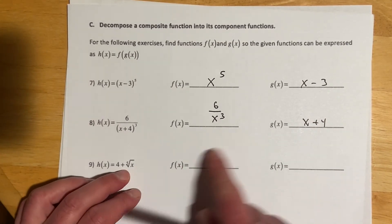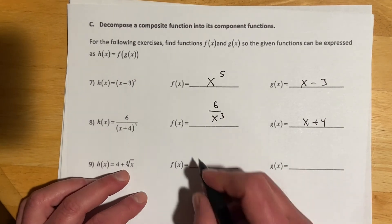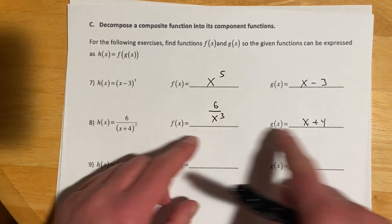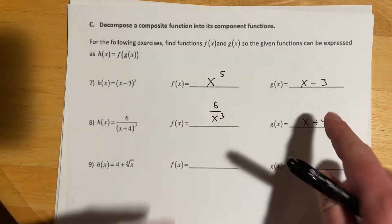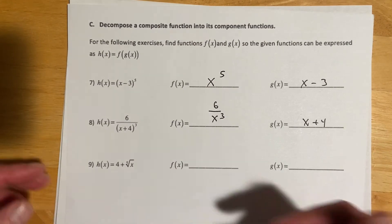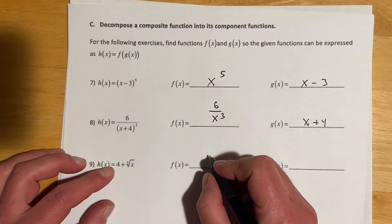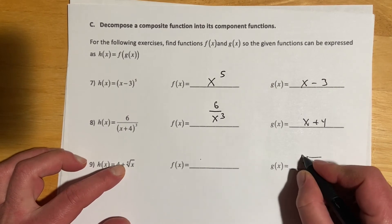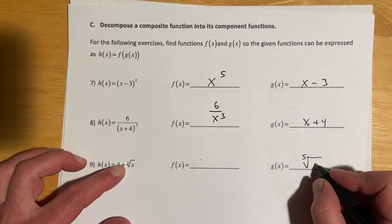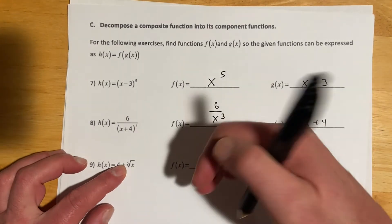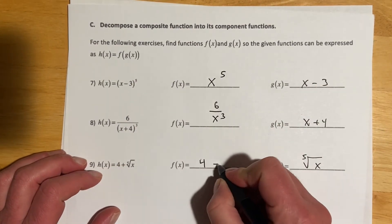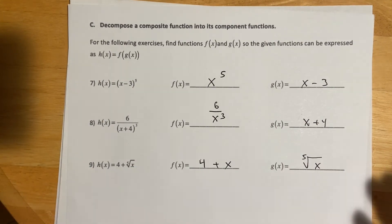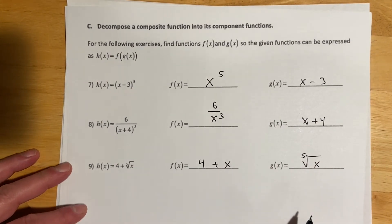For number 9, there are a couple of ways to write this. Part of the reason we pick a specific one is because of how it connects to calculus. Here I used g of x equals the fifth root of x, and then we plug that into the x in f. There are a couple of different ways we could go, but this is the one the computer accepted.